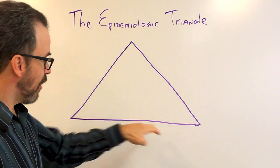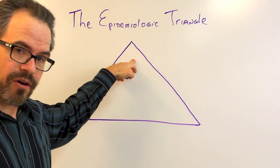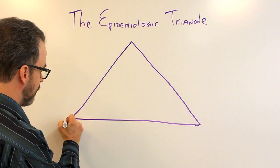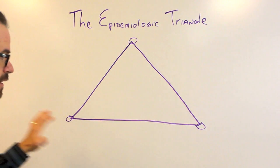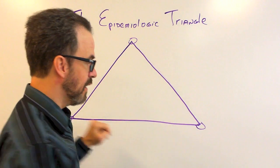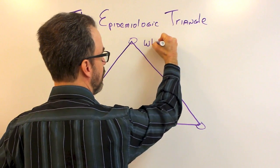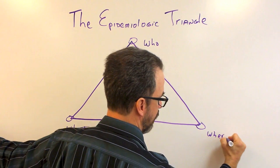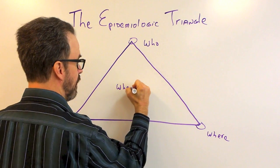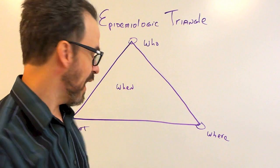It's basically a triangle and at each angle they're called vertices. Basically the Epidemiological Triangle is the who, the what, the where, and the when questions of public health.